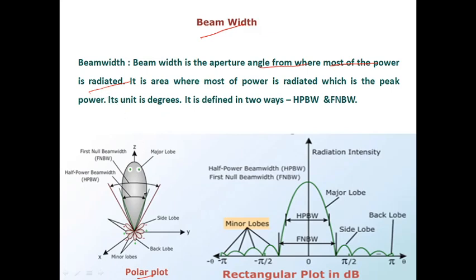Beam width is the aperture angle — the opening angle — and we calculate it on the main lobe. Beam width calculation is always made on the main lobe or major lobe. Simply put, it is the area where most of the power is radiated, which is called peak power — that is, where we have the maximum power.